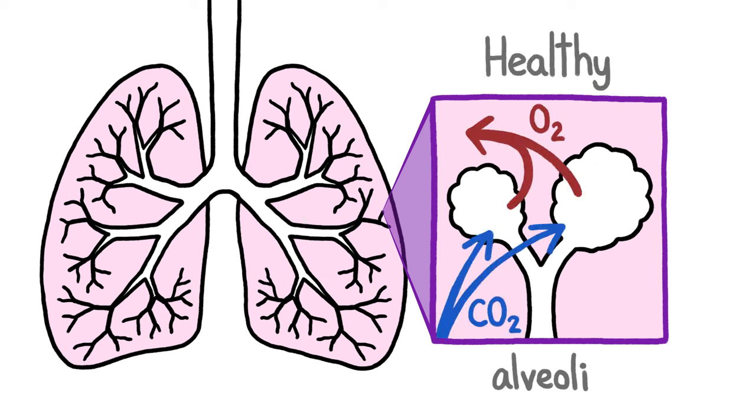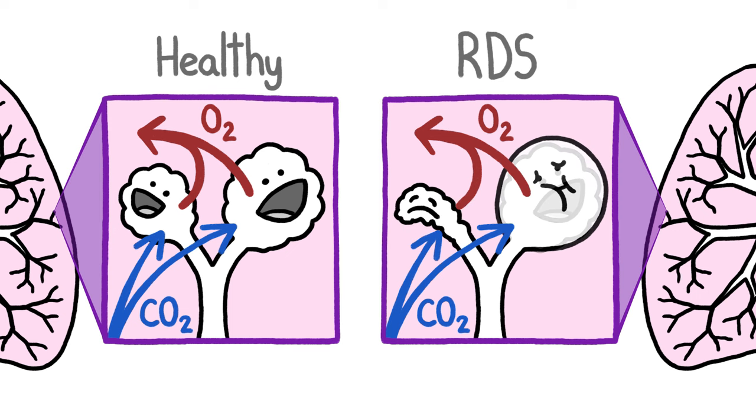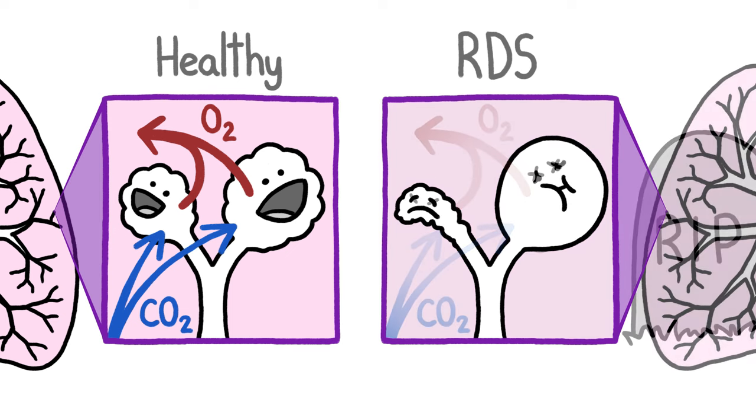In healthy babies, the alveoli are like perfectly inflated mini balloons. But in the lungs of preemies with RDS, doctors found that many of the mini balloons had either permanently collapsed or stretched way out, interrupting gas exchange and causing the babies to suffocate.